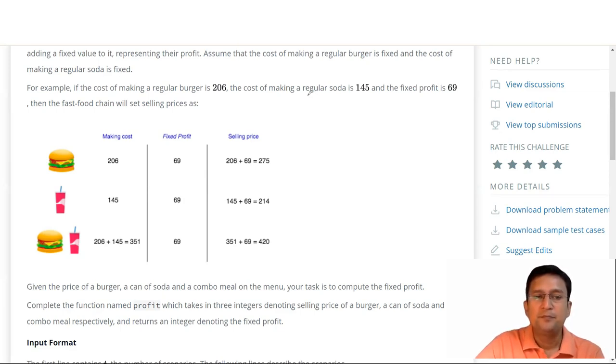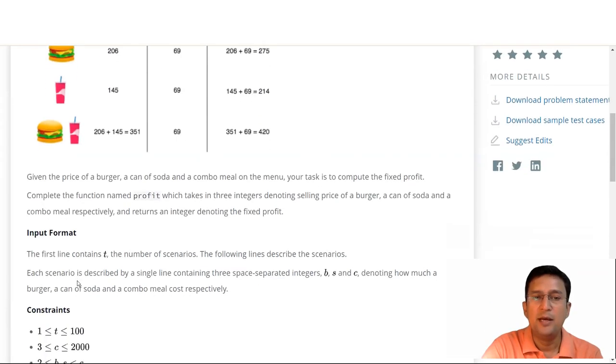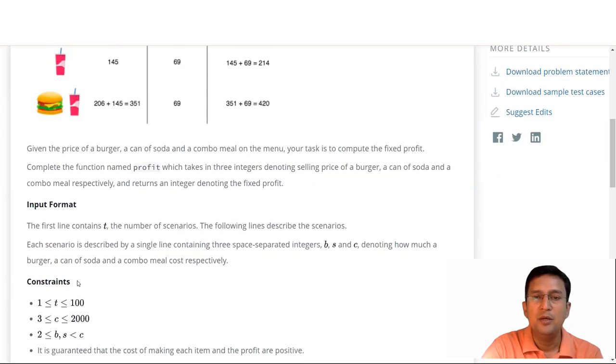This is the price of a burger. Given the price of a burger, a can of soda, and a combo meal on the menu, your task is to compute the fixed profit. This is the selling price of burger given, the selling price of soda given, and the selling price of a combo meal given. Compute the total profit.